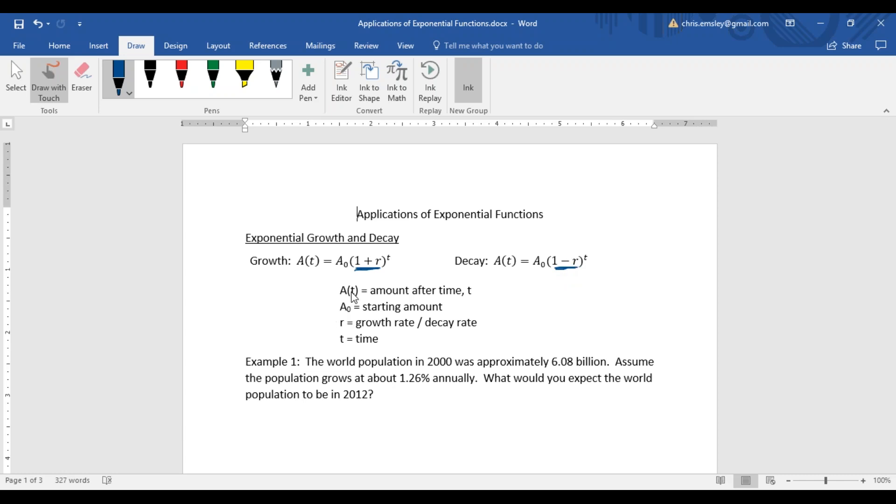Our variables here: our function is going to calculate how much of this substance or how much money or how many people we have after time t. A sub 0 is our starting amount, r is our growth rate given as a percent but you need to change it to decimal form. And t will be time, and the units of time will depend on the specific problem.